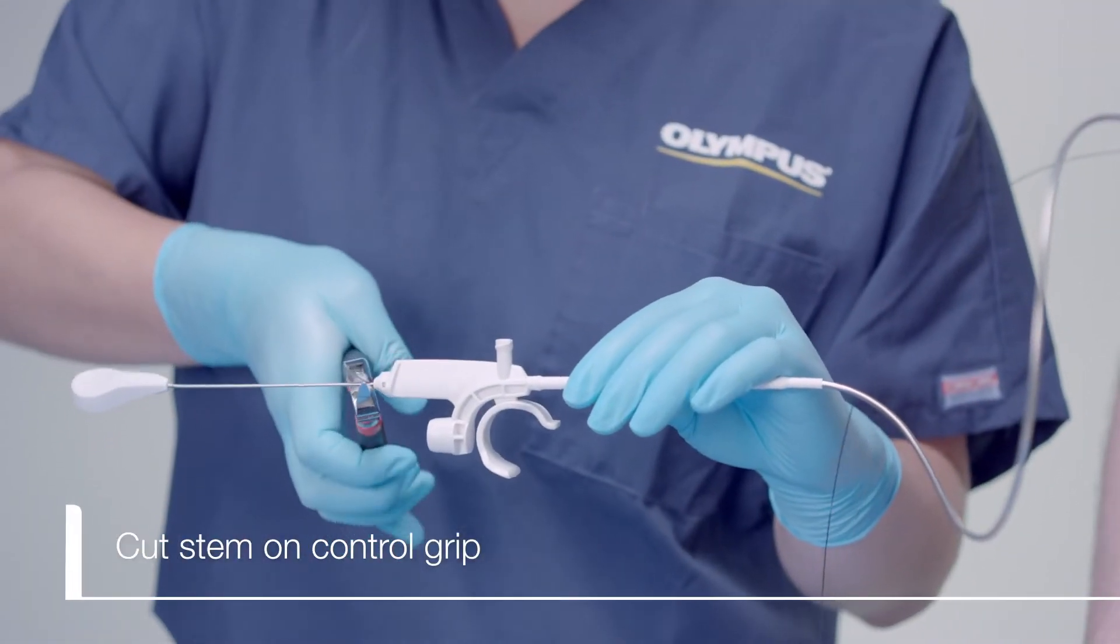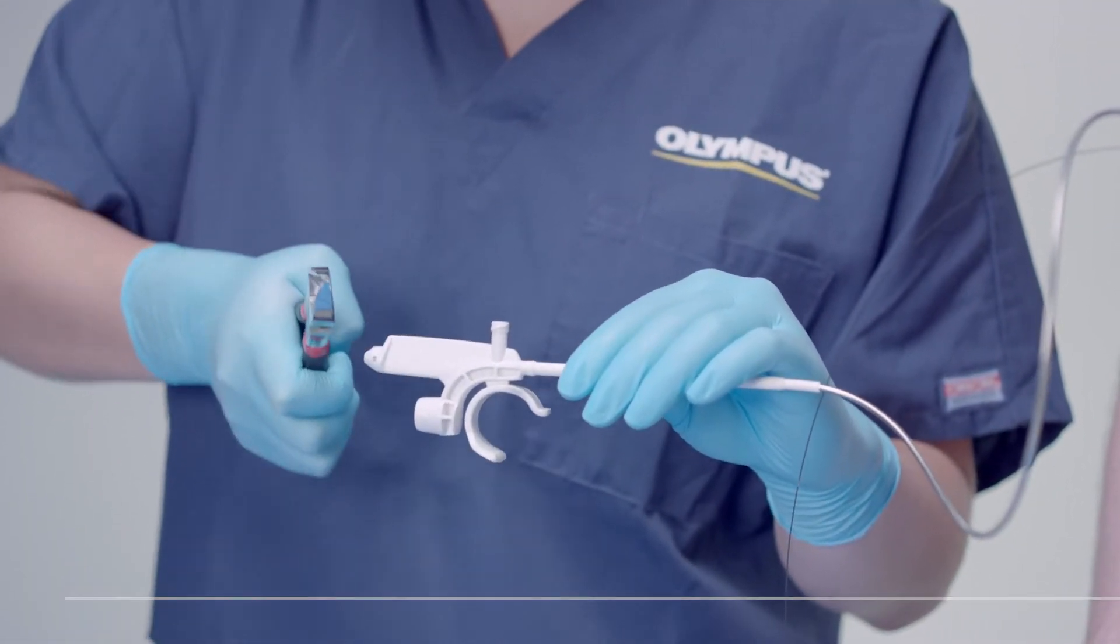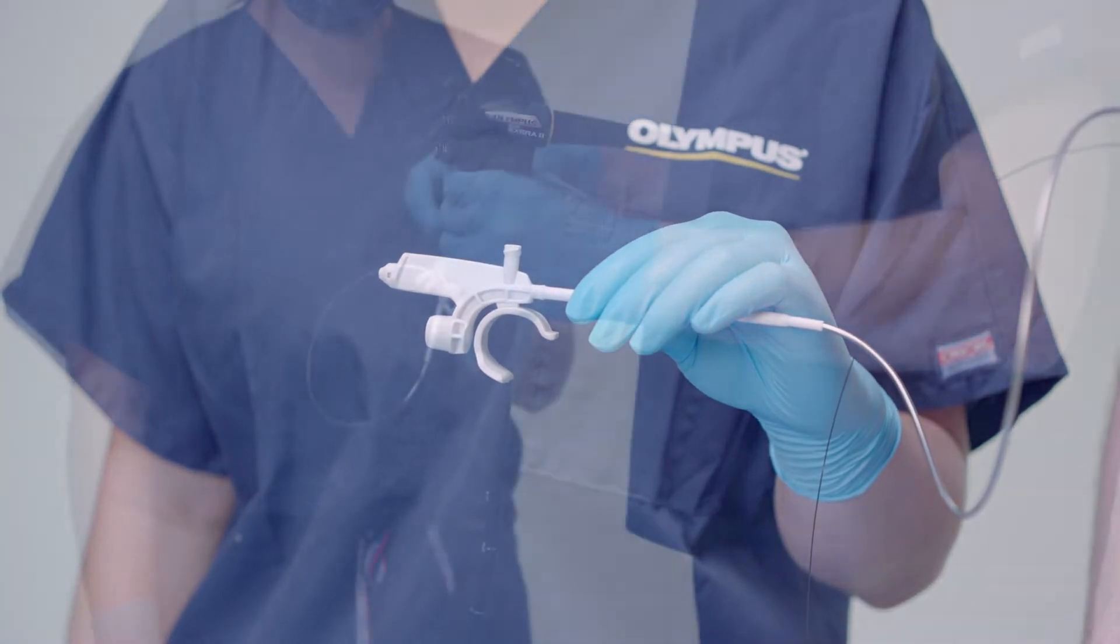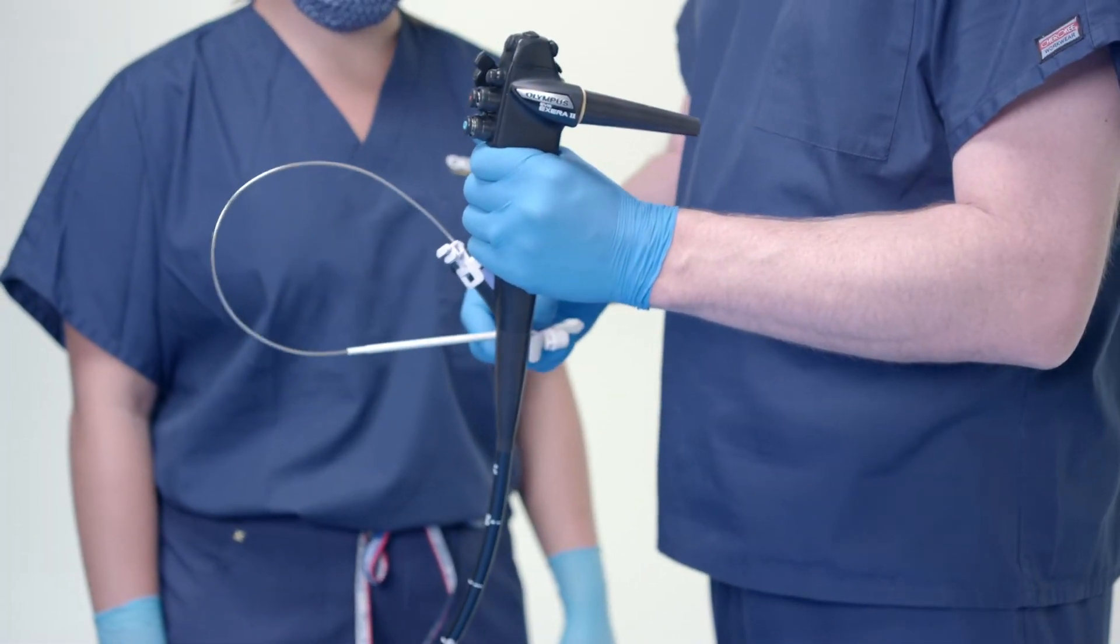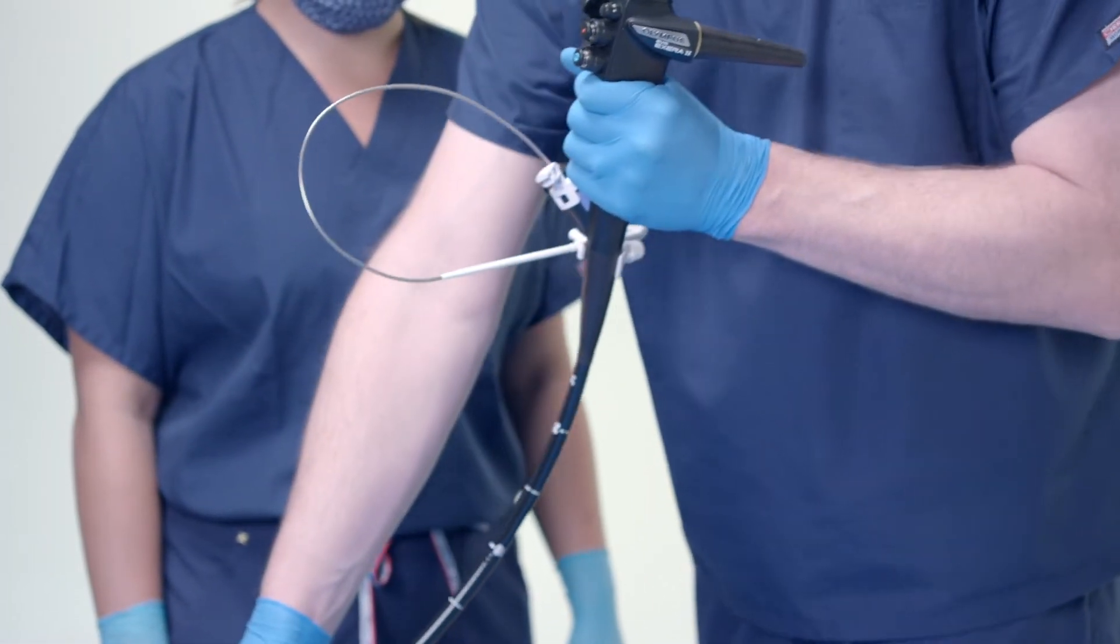First, cut the stem on the VortiCatch V Control Grip. Wire cutters are not provided by Olympus. If the guide wire is still in the patient, then remove it at this time.